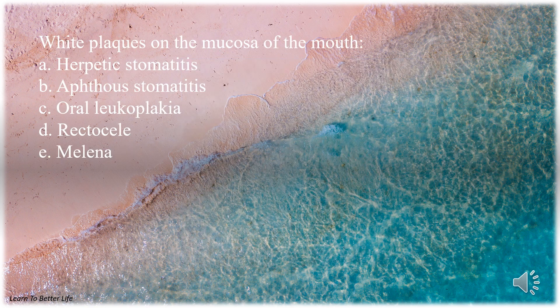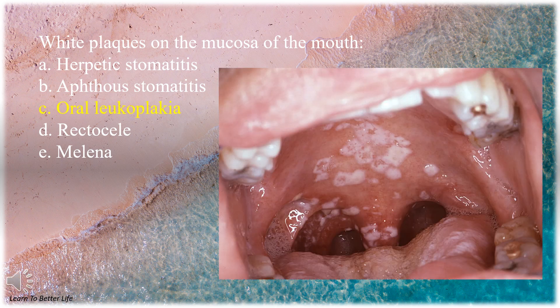White plaques on the mucosa of the mouth. A. Herpetic stomatitis. B. Aphthous stomatitis. C. Oral leukoplakia. D. Rectocele. E. Melena. The answer is C. Oral leukoplakia.